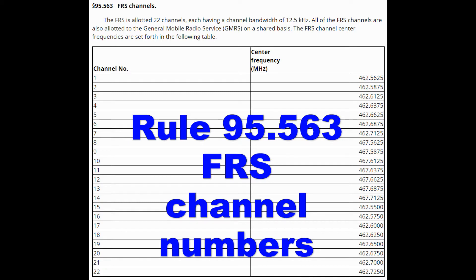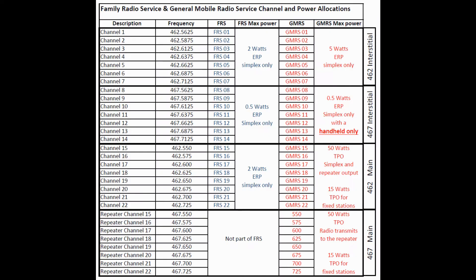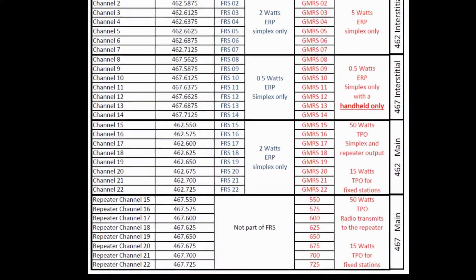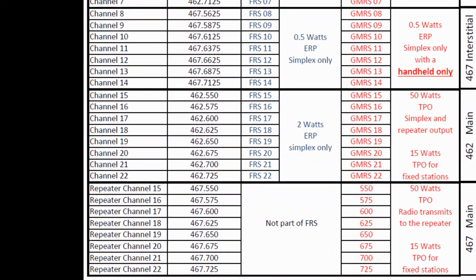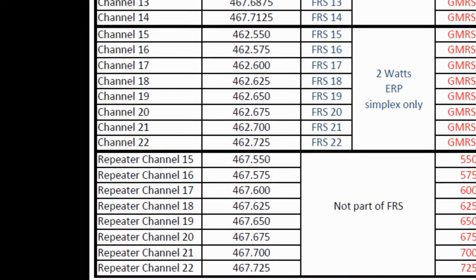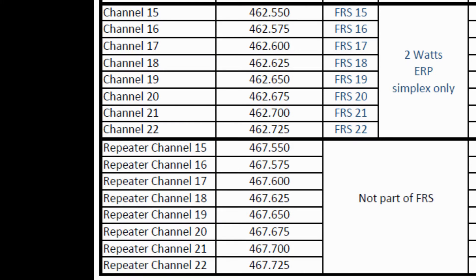In another video we talked about FRS channels 1 through 14. In this video we're going to talk about channels 15 through 21 and also the repeater channels for GMRS. Referring to the chart I made for channels versus power for FRS and GMRS, channels 15 through 22 on FRS can transmit at 2 watts ERP — effective radiated power out of the antenna — and simplex only. The repeater channels, the ones starting with 467.550 and on, are not used by FRS at all.